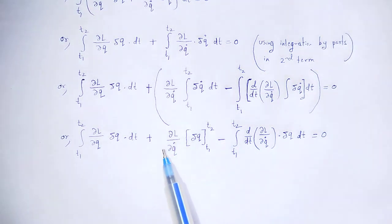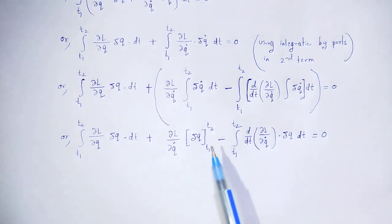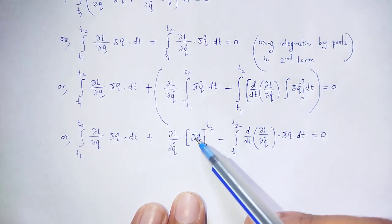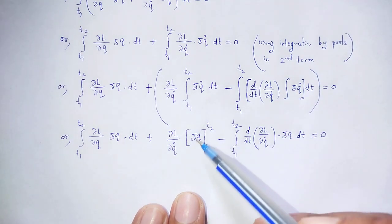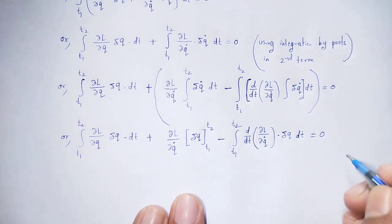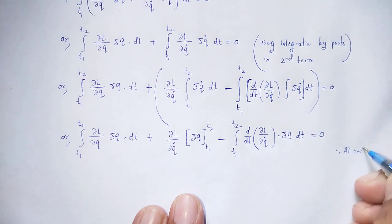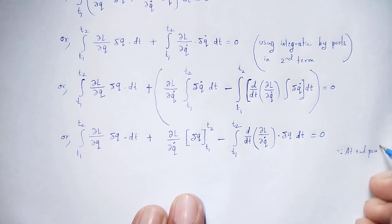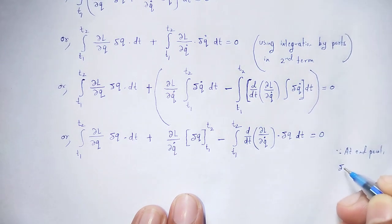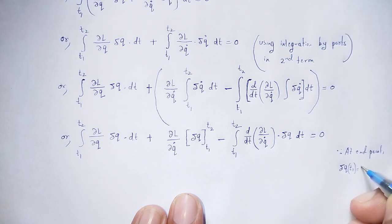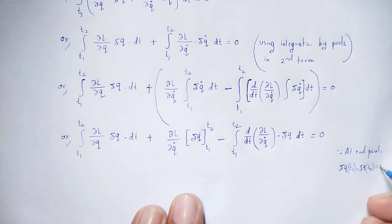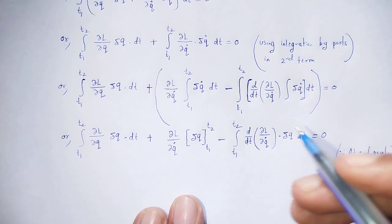According to Hamilton's principle, the variation at the end points is zero: δq at time t1 is equal to δq at time t2, which equals zero. So the boundary term (∂L/∂q̇)δq evaluated from t1 to t2 vanishes.